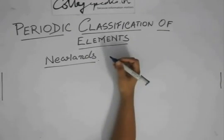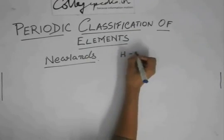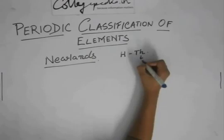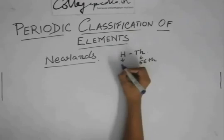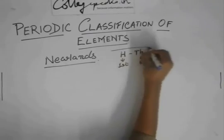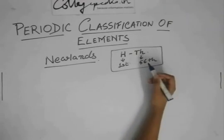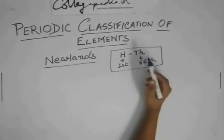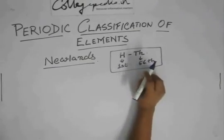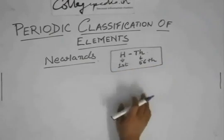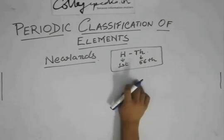Newlands classified elements from hydrogen to thorium. Thorium is the 56th element. You just need to memorize it was from hydrogen to thorium and it consisted of 56 elements, because you never know what might be asked in an examination.